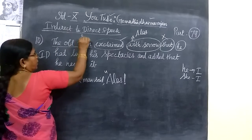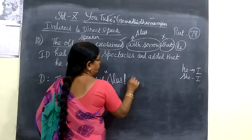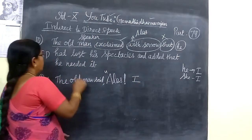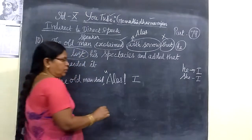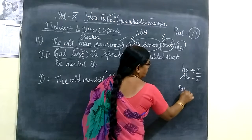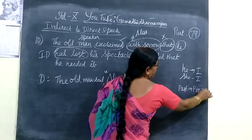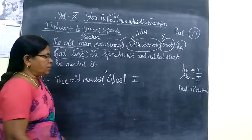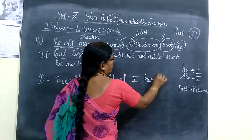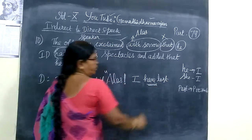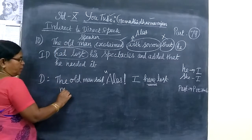It refers to the speaker — the old man — and he is the speaker. So you write 'I'. Then 'had lost' — 'had' is past tense. When converting indirect to direct, past tense is changed into present tense. So it becomes 'I have lost'. The first sentence will be changing, not the second one. So: 'I have lost my spectacles'.